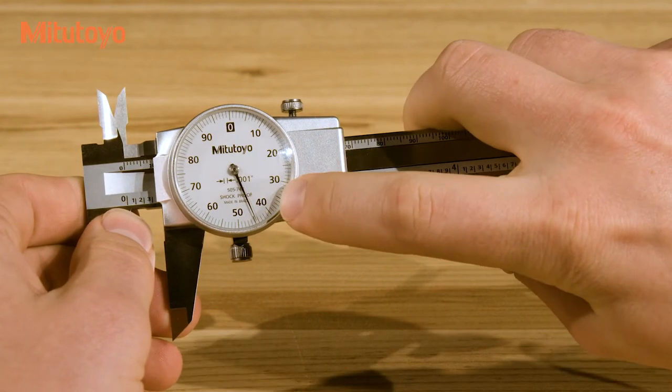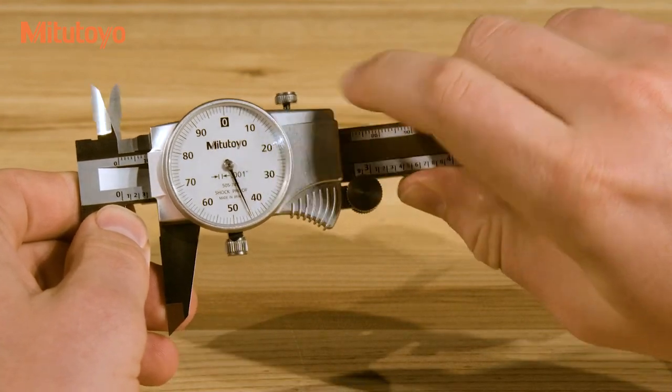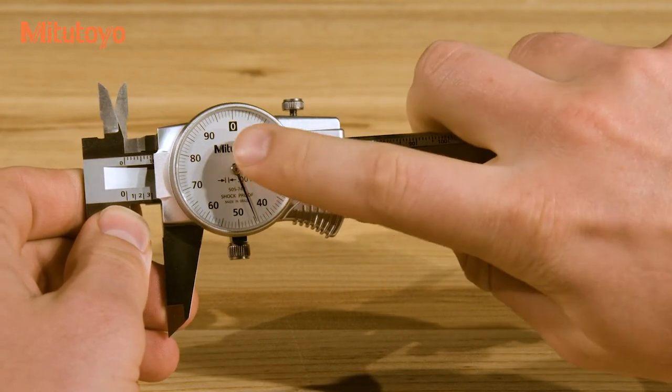The dial is marked in .001 inch intervals and is read by identifying the graduation indicated by the hand.